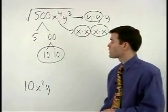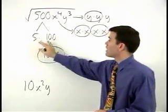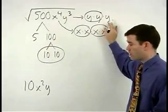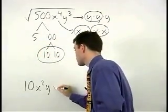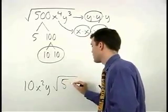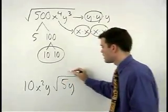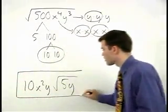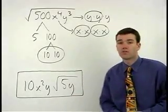What we're left with on the inside are the 5 and the y that don't pair up. So we have the square root of 5y. And the answer is 10x squared y times the square root of 5y.